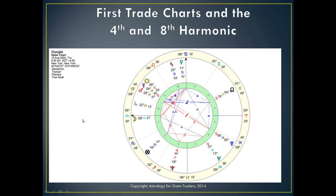I want to explain this by using first trade charts, and we're going to be looking at predominantly the fourth and eighth harmonic. When we look at first trade charts, we want to know the day a stock is listed on the stock exchange. Basically that is what we would term as a natal chart when someone is born — it's the same thing, capturing the energy for that day they are listed. As Gann said, if you know the beginning, you'll know the end, because we need a starting point — it's got a vibration.